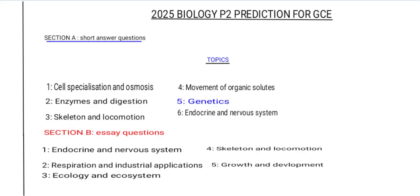The following topics are likely to come in your paper. The first one is cell specialization and osmosis. Under cell specialization and osmosis, you need to know different types of cells specialized in plants and animals, and also the effect of osmosis on those specialized cells.